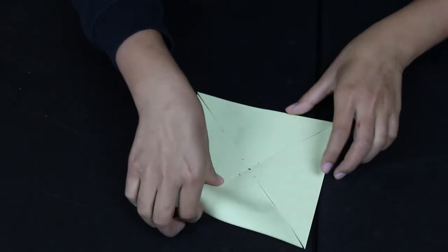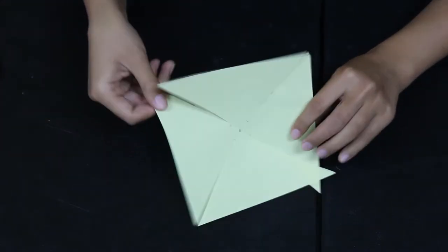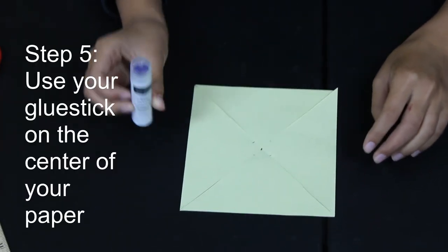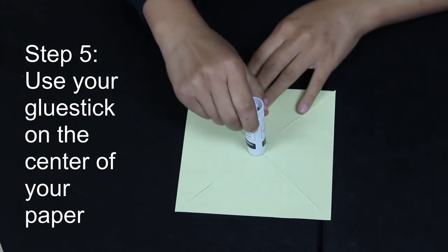It should look like a little floppy paper. We're going to take our glue stick and put a little glue right in the middle of that paper so it sticks a little better.